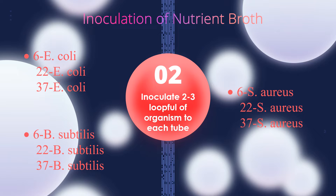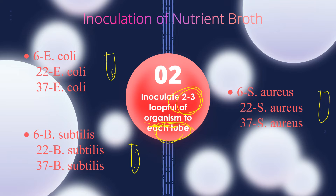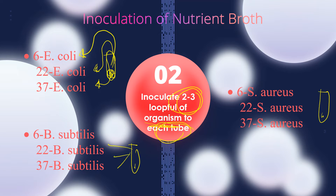The second step is the inoculation of two to three loopfuls of the organism to each of the nutrient broth tubes. The organisms given per group would be E. coli, B. subtilis, and S. aureus. From each of these stock culture broths, we will transfer two to three loopfuls for each test tube — two to three loopfuls for the tube labeled 6°C, another two to three for the tube labeled 22°C, and another two to three for the tube labeled 37°C. You will do this for each of the organisms and their corresponding test tubes.